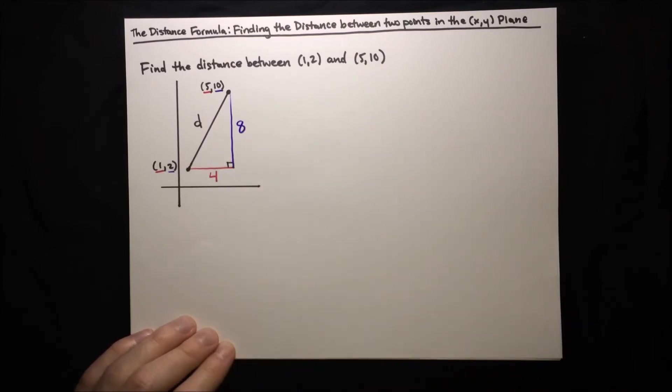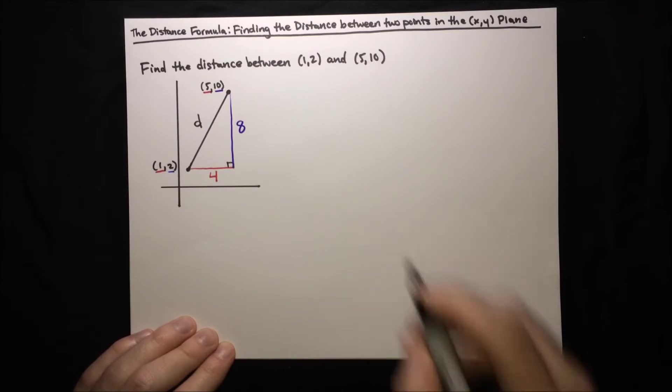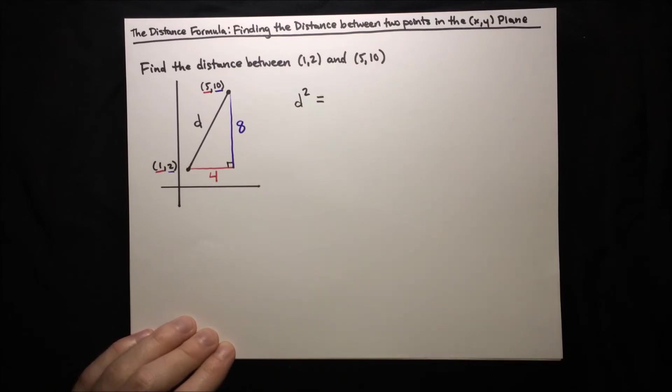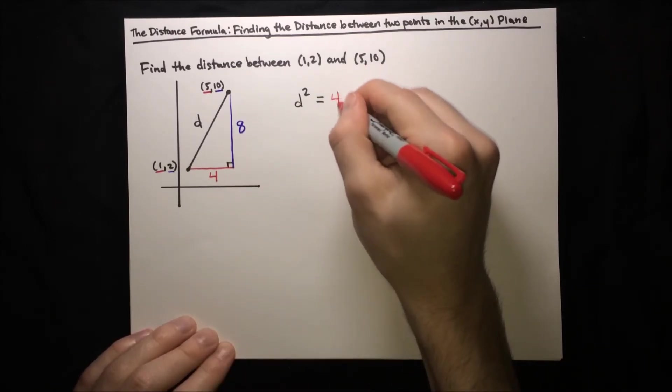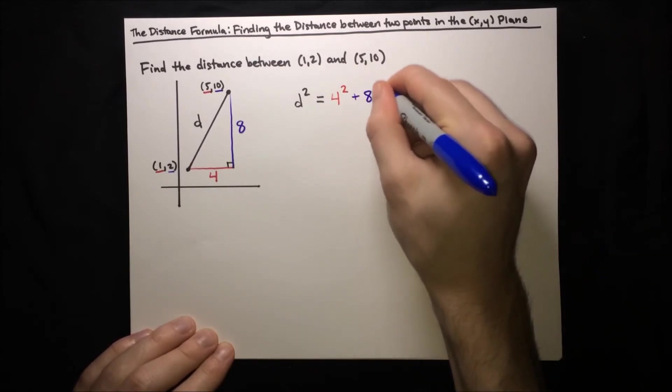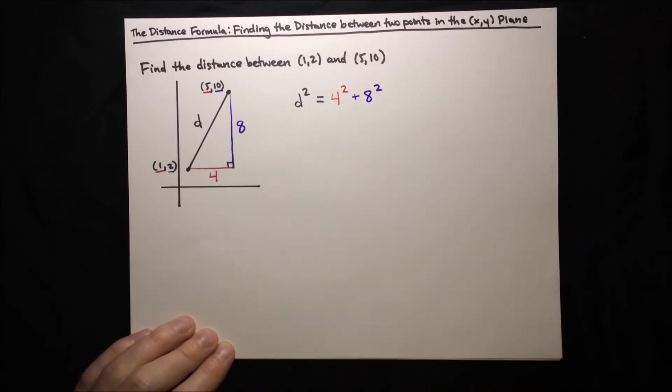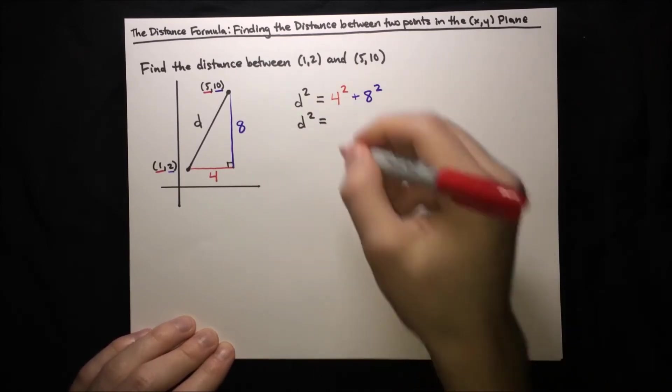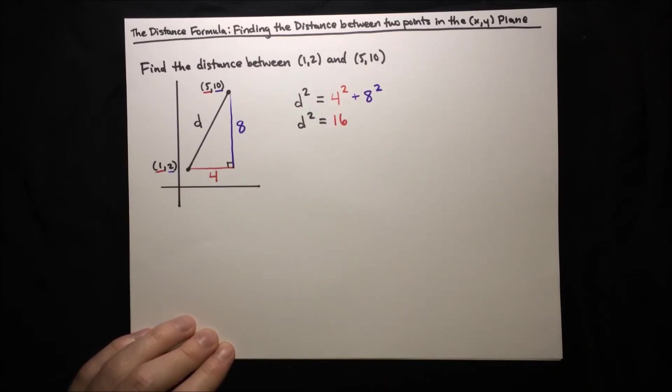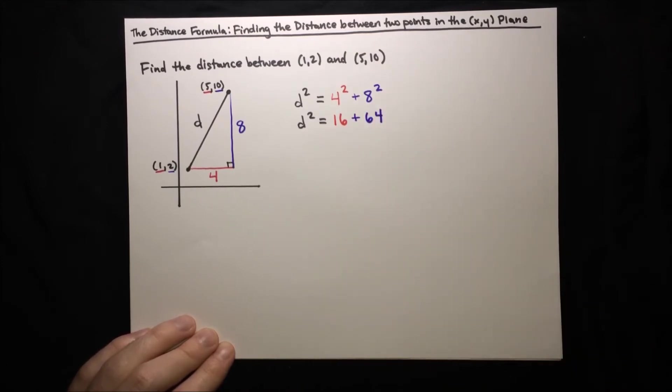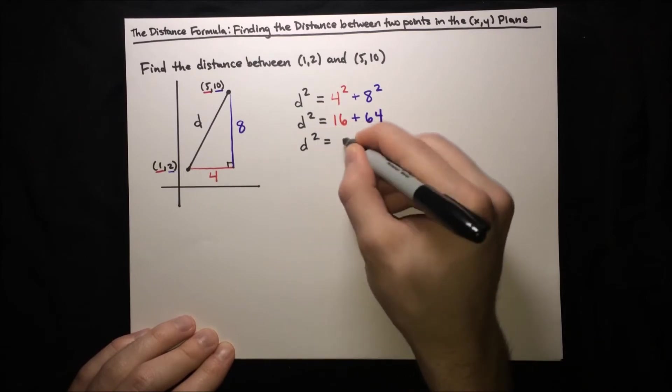And now we can go ahead and use the Pythagorean theorem. We can set up the square of the hypotenuse, d, is equal to the square of the first leg, 4, so 4 squared, plus the square of the second leg, 8. And now we can go ahead and compute this and solve for d squared. So let's go ahead and square those two legs. d squared equals 4 squared, which is 16, plus 8 squared, which is 64. So then adding them together, we get that d squared equals 80.